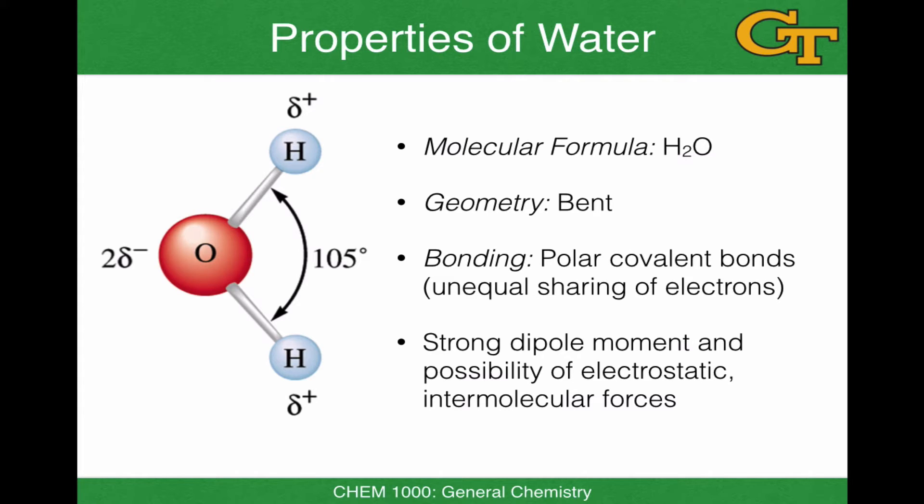So let's begin with a few of the important properties of water. The molecular formula of water is H2O, and this is one of the most well-known molecular formulas in all of chemistry. The geometry of the water molecule, if we pay attention just to the hydrogens and oxygen, is bent. And in terms of bonding, this is a polar covalent molecule. And by polar, we mean there's unequal sharing of electrons between the oxygen and hydrogen atoms.